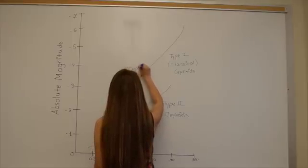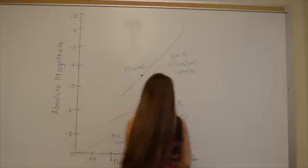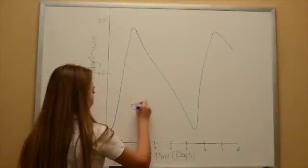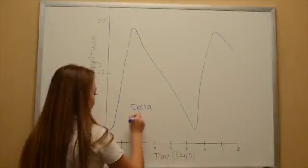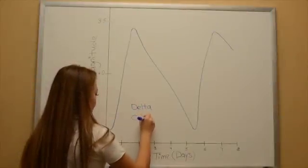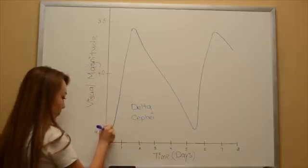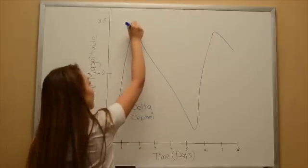A graph of the brightness of the star delta Cepheid versus time shows that it is varying in brightness with a period slightly more than five days.